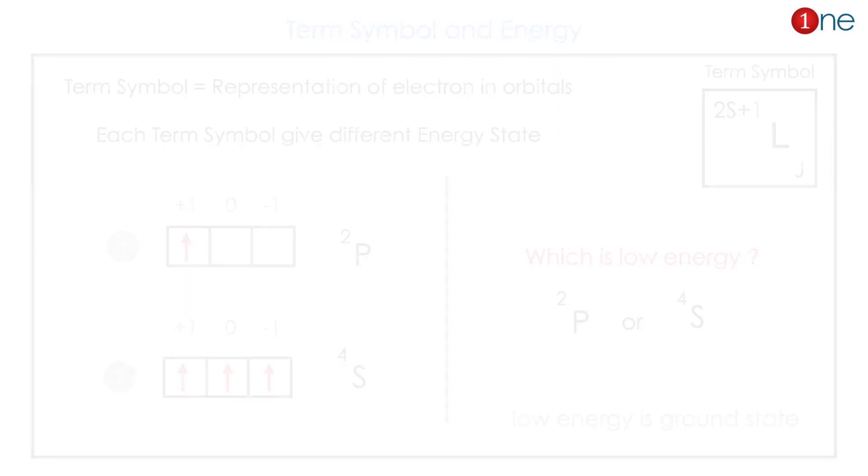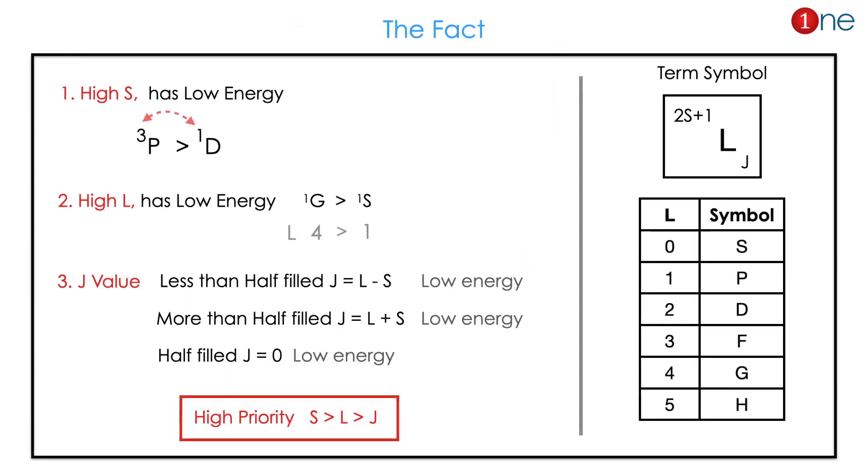Here to find the lower energy you should know the facts. High value of S will be always lower and high value of L will be always lower. Here J value is crucial. J value less than half will mean L minus S. More than half will mean L plus S. If it is half filled, J equals zero. Normally you give priority for S, then L, last comes J. So you should know all three facts to find the low energy.